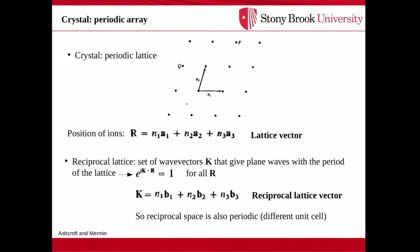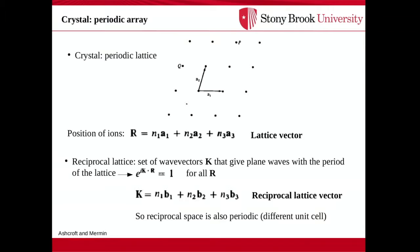It's very useful in solid state physics to work in reciprocal space. We define the reciprocal lattice by introducing vectors K that give plane waves with a period of the lattice, meaning e^(iK·R) equals one for all possible lattice vectors R. Working things out, K has the form: an integer times B1, plus an integer times B2, plus an integer times B3. So the reciprocal lattice is also periodic. As in any Fourier transform, the larger A1 is, the smaller B1 will be — so the larger the unit cell in direct space, the smaller it will be in reciprocal space, and vice versa.